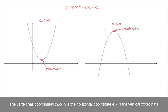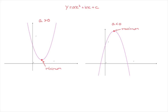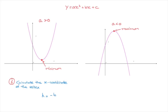To actually find the coordinates of the vertex, we follow two steps. Step one will always be to calculate the horizontal coordinate of the vertex — in other words, the x-coordinate of the vertex. Luckily there's a formula for that. The horizontal or x-coordinate of the vertex will always be given by: h equals negative b over 2a.